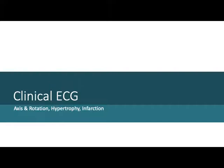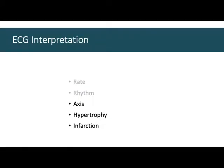The last section on rhythm was long and involved, but these remaining topics are fairly defined and linear — there's an answer or there's not in most cases. Interpreting axis and rotation can be done directly from ECG leads, along with hypertrophy and infarction — interesting characteristics you get from the 12-lead that you can't get from a single lead ECG. So we've done rate, we've done rhythm, axis and rotation is on deck, hypertrophy and infarction coming up.